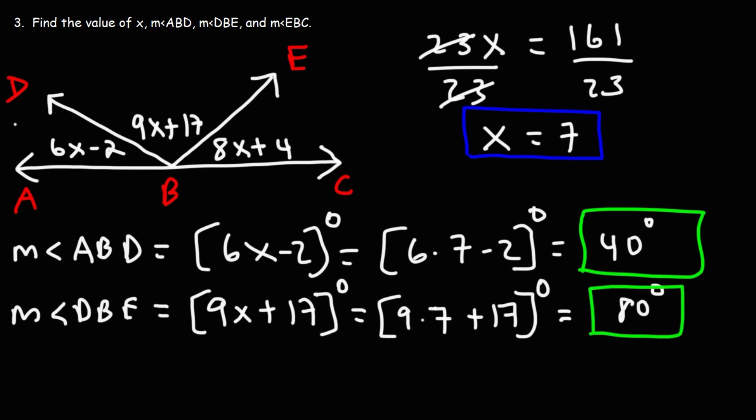So ABD is 40 degrees. DBE is 80. Now we can find the missing one, angle EBC. So that's going to be 180 minus the other two angles, 80 and 40. 180 minus 80 is 100, and 100 minus 40 is 60.